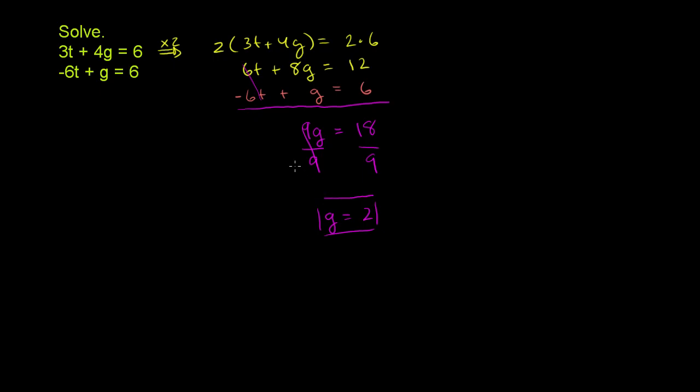Now we can substitute back and solve for t. And we can use either of these equations. Let's use the second equation right here. So we have negative 6t plus g. We just solved for g. g is 2, is equal to 6.